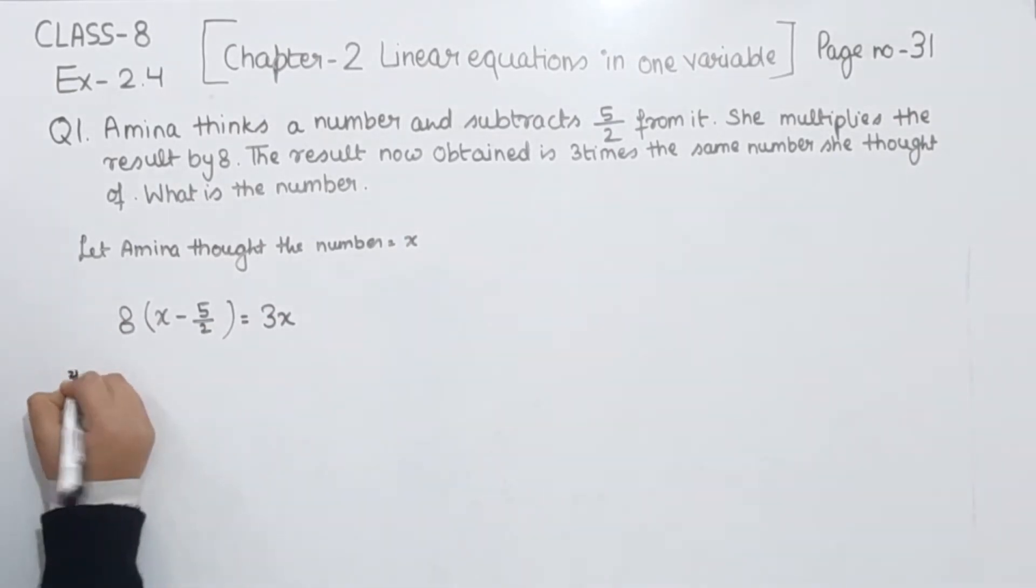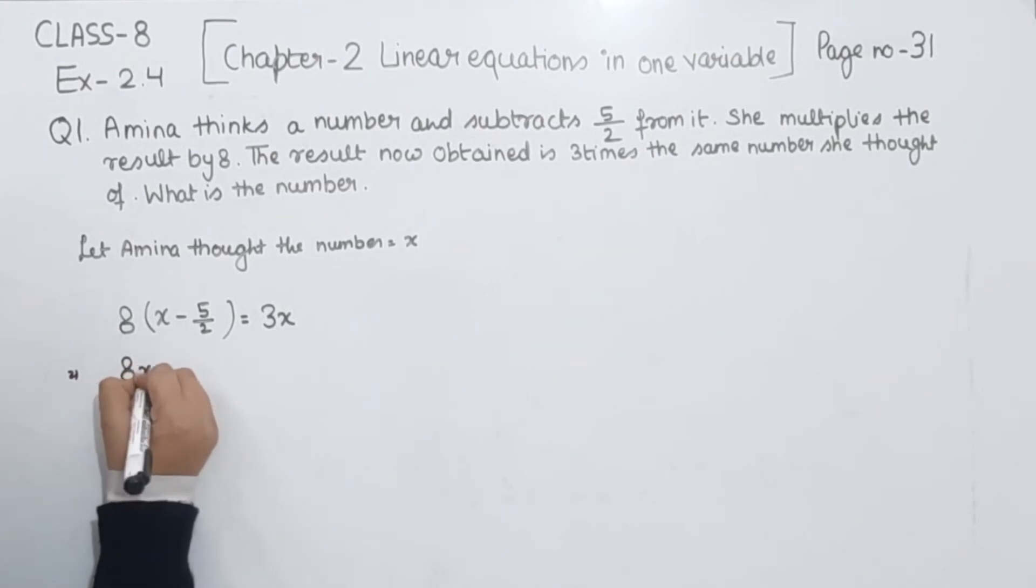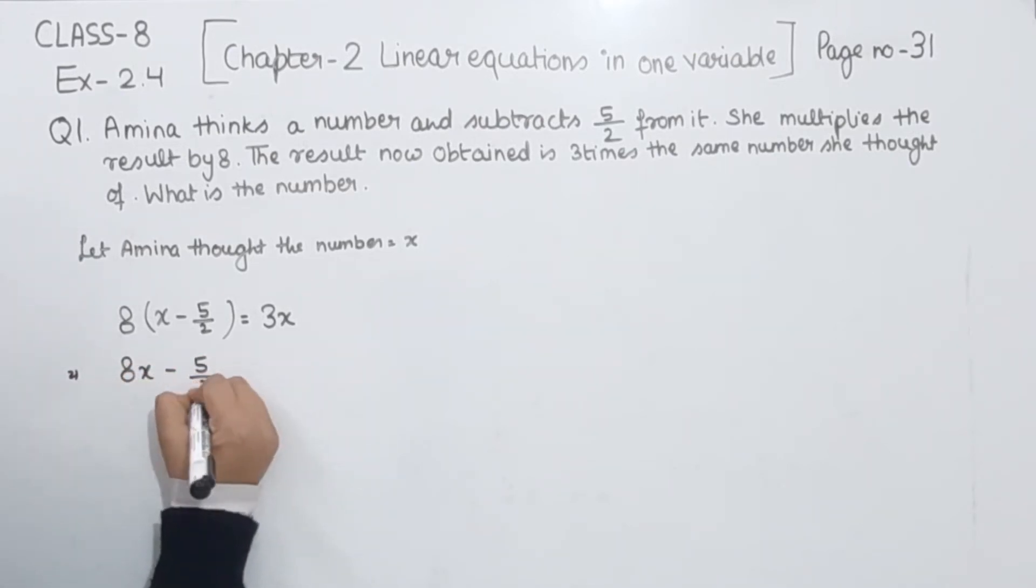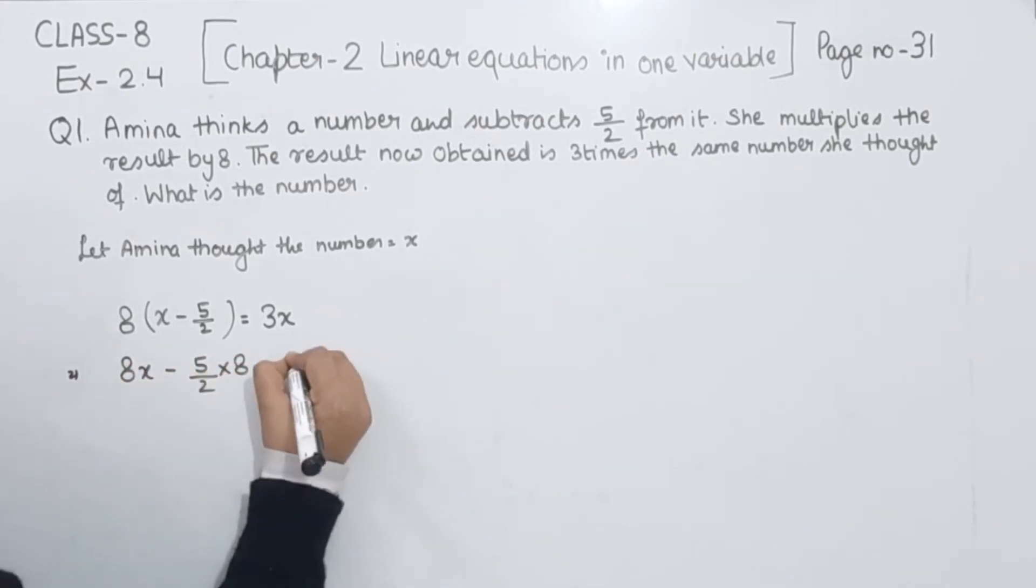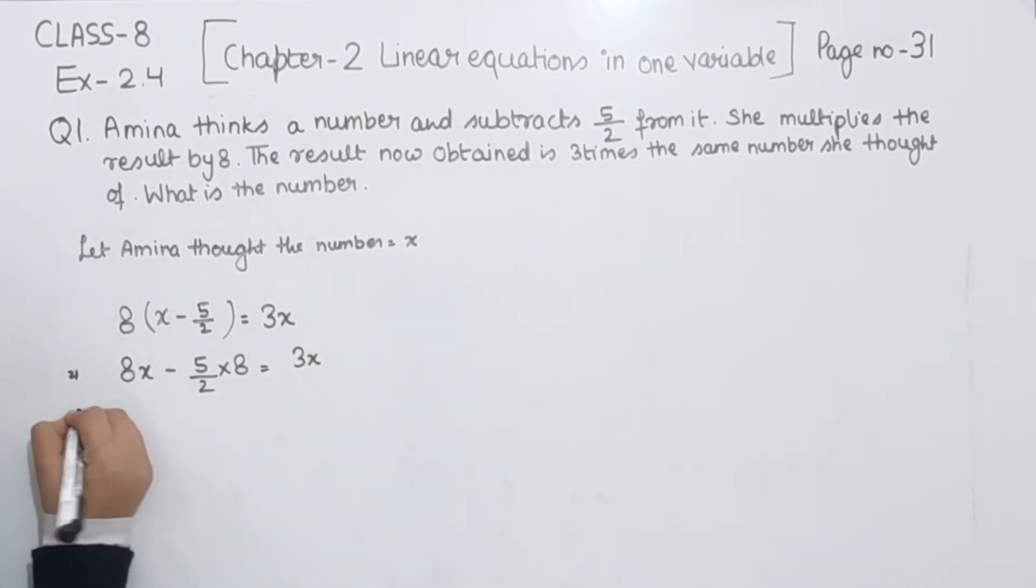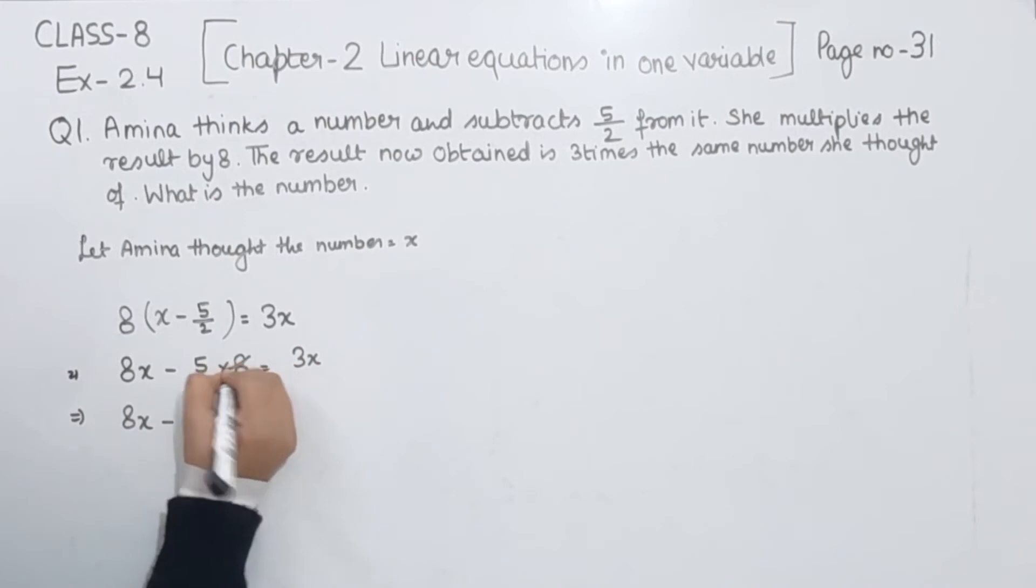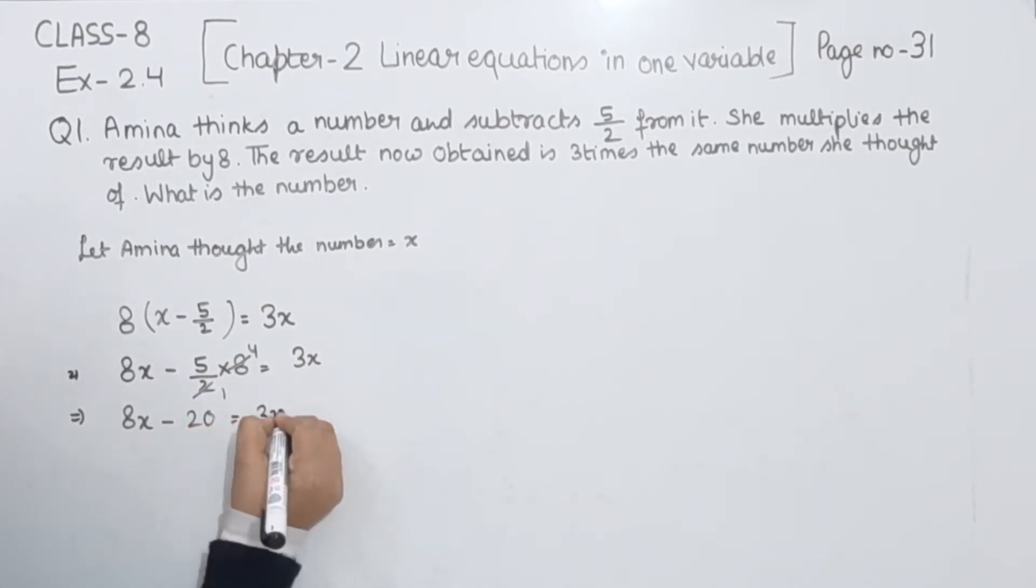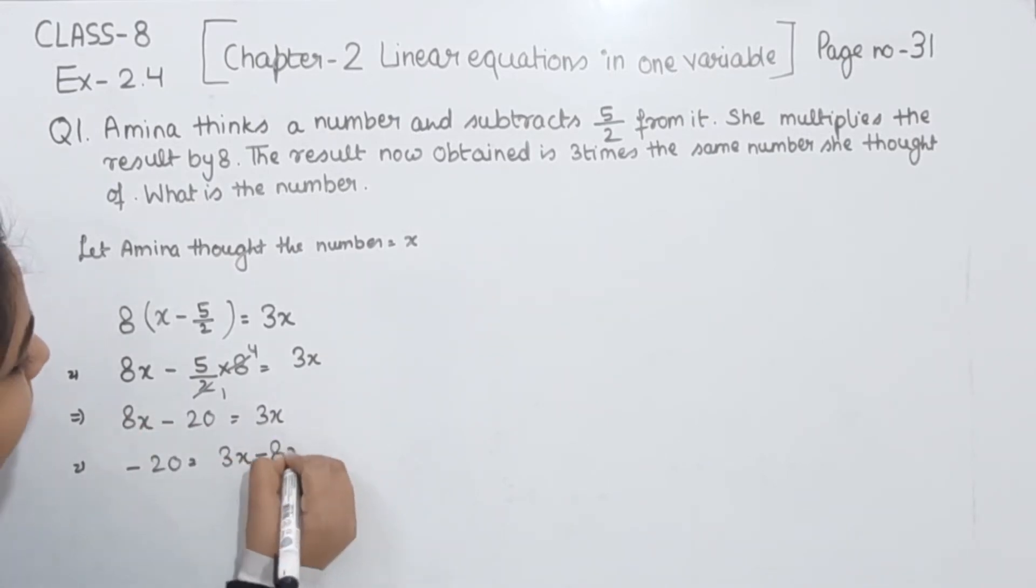Now we are going to solve this. 8 multiplied by x is 8x, and 5/2 multiplied by 8 equals 3x. Now 8x minus, 2 fours are 8 or we can multiply it, so 5 fours are 20, equals 3x. So 8x - 20 = 3x.